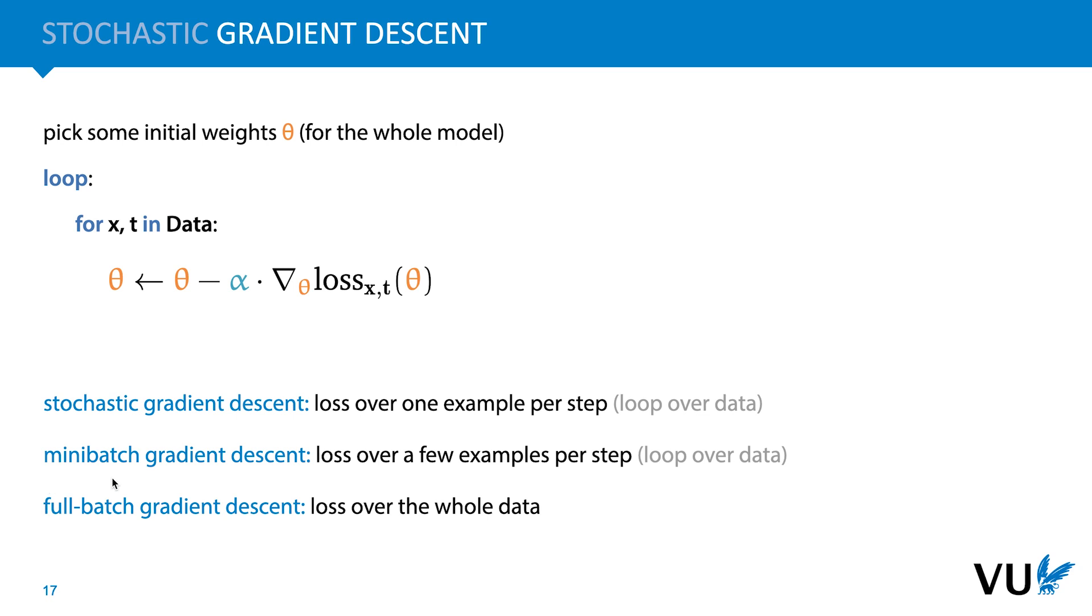In deep learning, we almost always use mini-batch gradient descent, but there are some use cases where full-batch is also used. The amount by which we scale the gradient is called the learning rate, and if we need to make multiple passes over our dataset, each one of those passes is called an epoch.